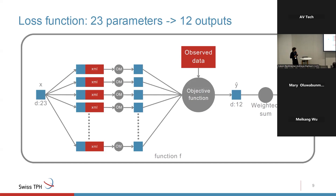To assess parameter quality, we have a rather complicated function where we simulate many sites and compare predictions from OpenMalaria to observed data from the literature and field studies. We group simulations by objectives: one for prevalence, one for clinical incidence, severe disease, parasite densities, and so on — 12 objectives in total. We calculate the residual sum of squares or the sum of log-likelihood to assign a score to each objective, and we can also compute the weighted sum to produce just one value. In the end, it's just a function: 23 parameters in, either 12 or one output.